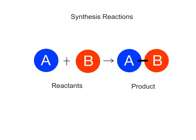In synthesis reactions, two or more small reactants combine to form one larger product. The reactants could be any atom, ion, or molecule. The word synthesis means to put together. These are creative reactions that build new chemical substances. A general equation for a basic synthesis reaction is: reactant A plus reactant B yields product AB.